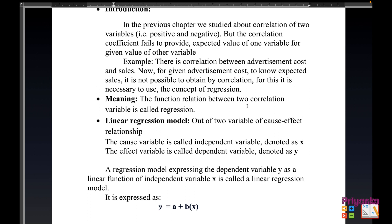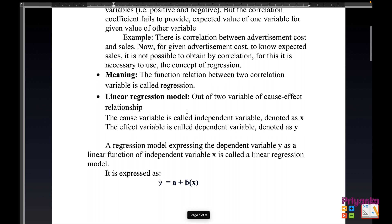The functional relation between two correlated variables is called regression. Out of two variables in a cause-and-effect relationship, the cause variable is called the independent variable, denoted as x, and the effect variable is called the dependent variable, denoted as y. A regression model that expresses the dependent variable y as a linear function of independent variable x is called a linear regression model.